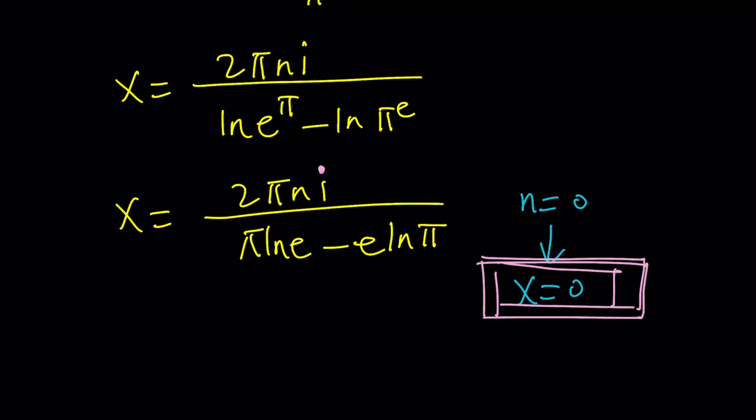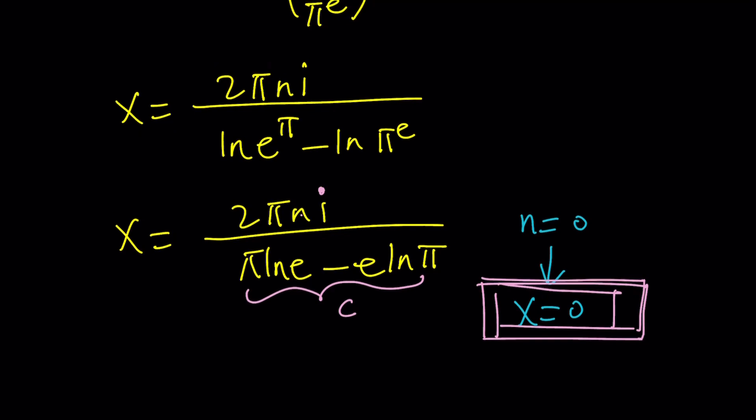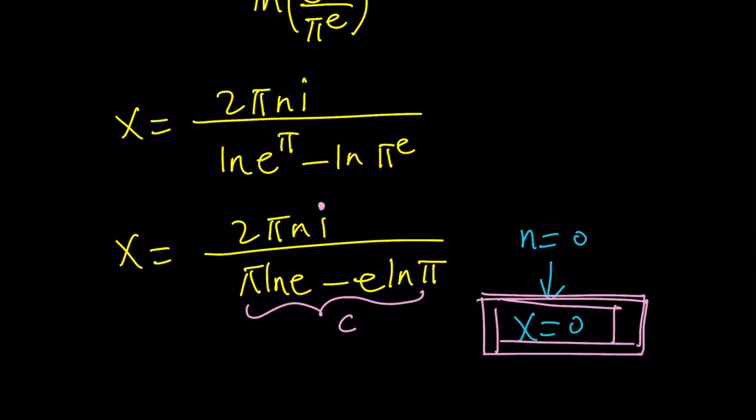So, x needs to be an imaginary number. Think about this. This is a constant, so you can call that c if you want. And then 2 pi is a constant. n is a constant, but you can change it. It's an integer, so it's just going to be a multiple of i. In other words, it's going to be pure imaginary. Okay?